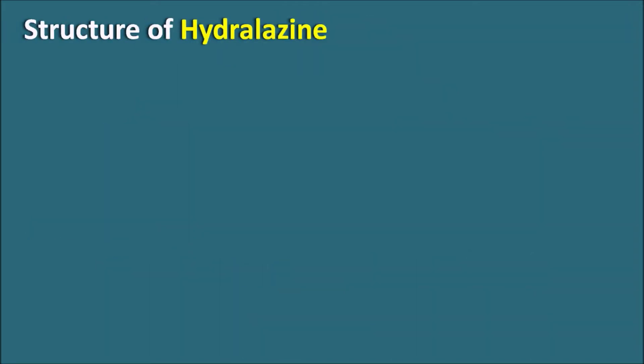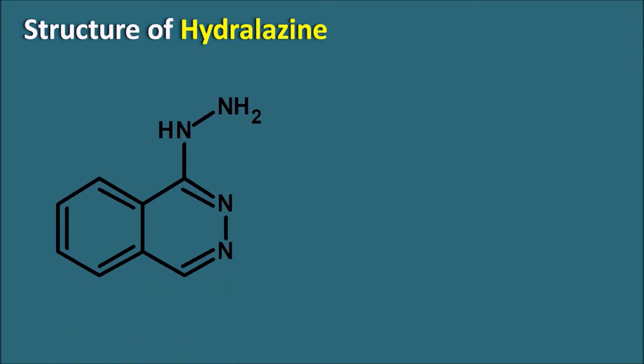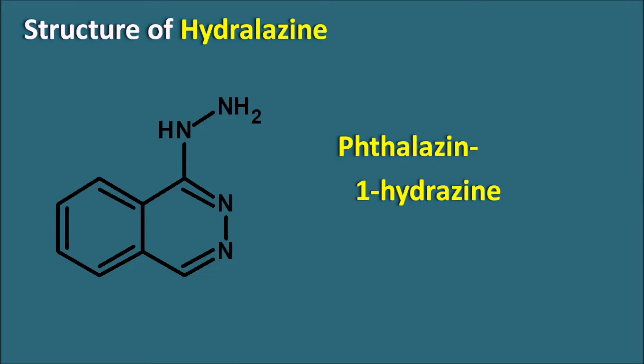First of all, let us see the structure of hydralazine. Hydralazine has a hydrazine functional group attached to a heterocyclic ring system — that is the phthalazine ring. So this phthalazine ring system is attached with the hydrazine functional group at the first position. That is nothing but hydralazine — phthalazine plus hydrazine.